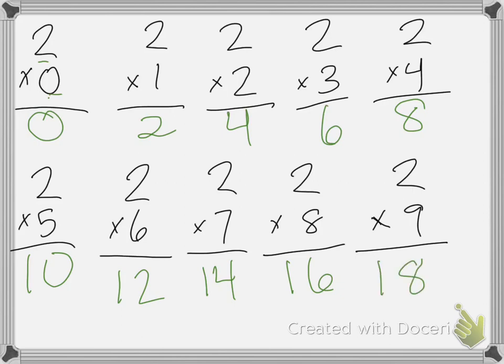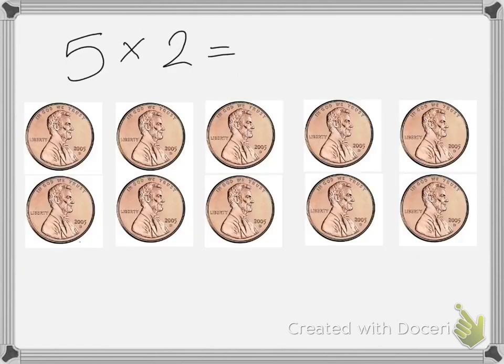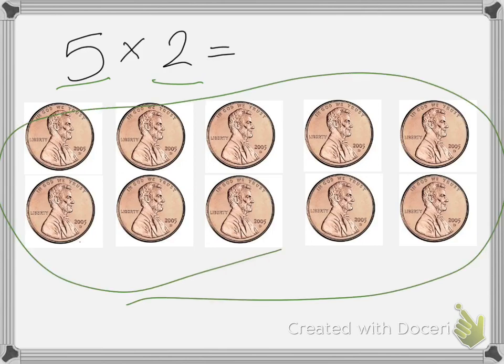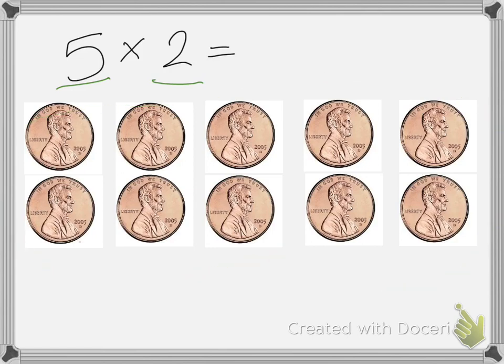The numbers we multiply are called factors. That would be these two numbers. If I have 5 times 2, that's asking for 5 groups of 2 pennies, which is what I've shown here. And I can see that I have a total of 10 pennies. And that's it for this lesson. Good luck on your homework.